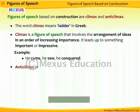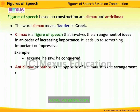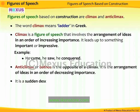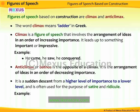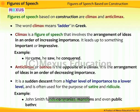Anticlimax, or pathos, is the opposite of a climax. It is the arrangement of ideas in an order of decreasing importance — a sudden descent from a higher level to a lower level, often used for satire and ridicule. For example, 'John Smith funds companies, mansions, and even public bathrooms.' The various places he funds are arranged in an order of decreasing importance, making the statement ridiculous in nature.